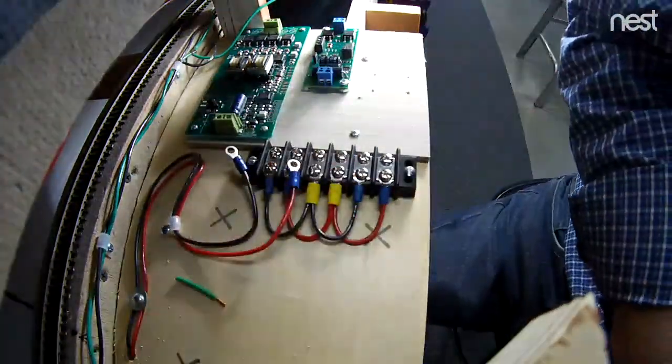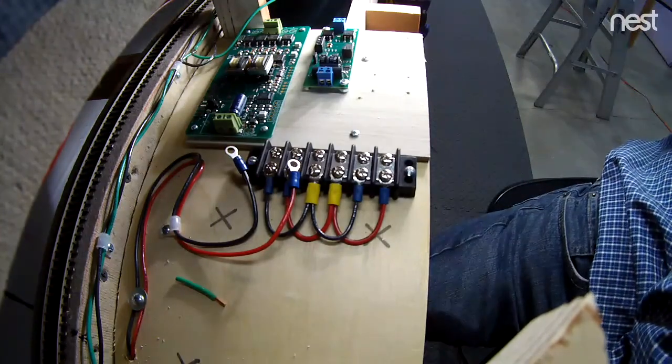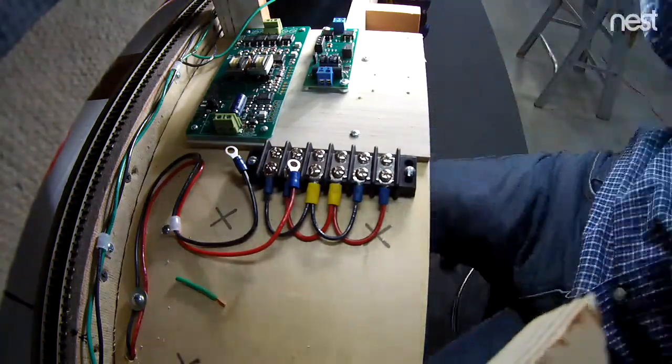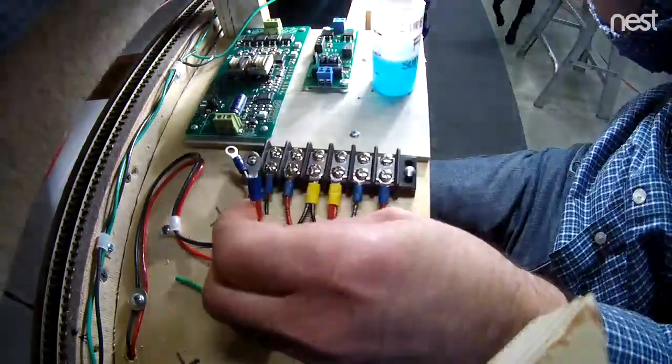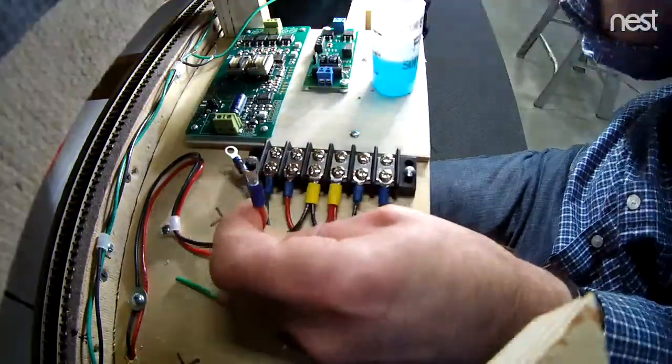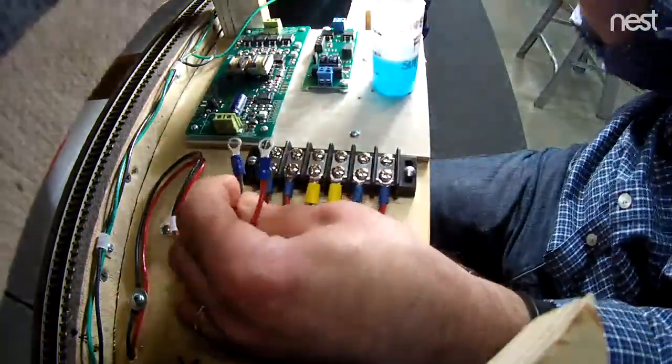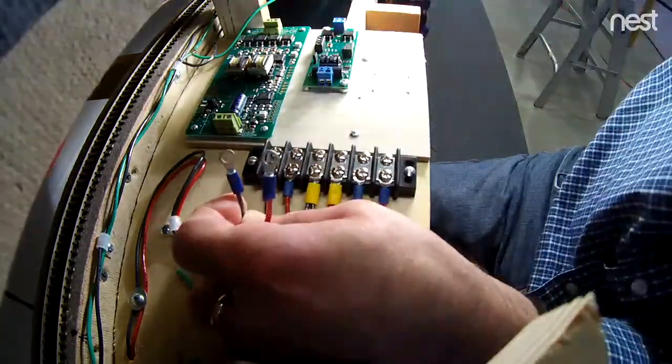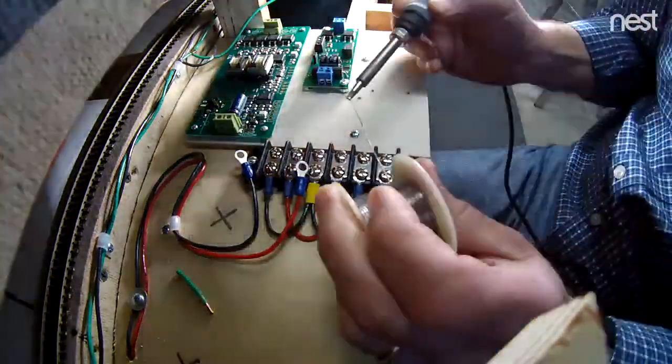This one currently has two breakers. One is a PSX-AR autoreverser from DCC Specialties, and the other one, the smaller one, is the NCE-EB1. The other side of the wall has three EB1s, and this side will eventually have a third, and that's what the open space is for.